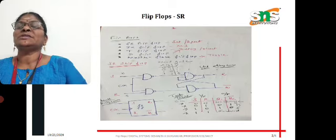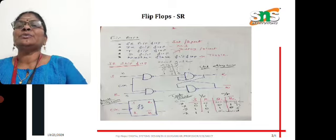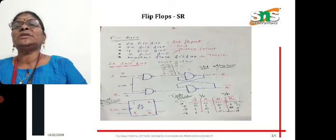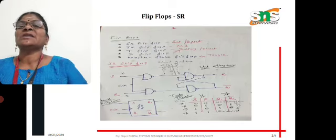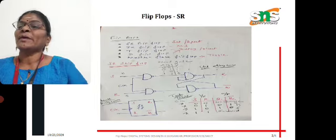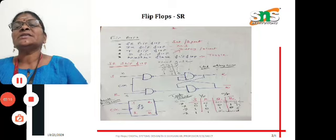We are going to discuss the NAND gate function. If any of the inputs is 0, the output is 1. If both inputs are high, the output will be low. This is the function of the NAND gate — NAND gate is the inverse of the AND gate.